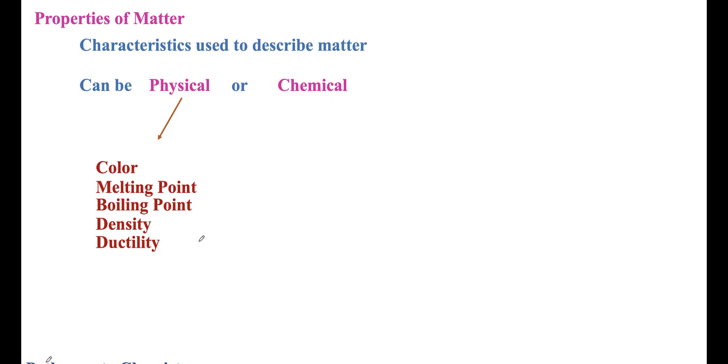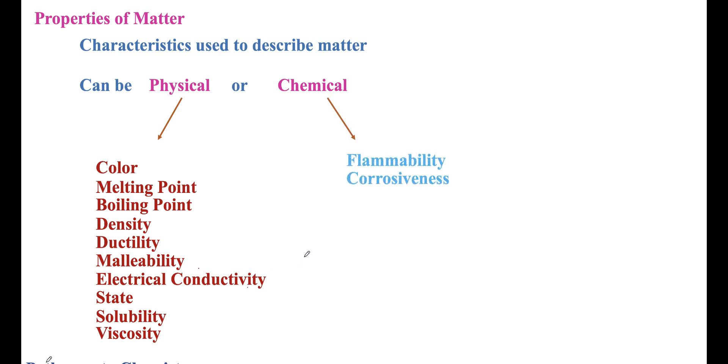Ductility would be, for example, metals—we're able to draw them into wires. Malleability—we're able to pound metals into shape. Electrical conductivity is a physical property. The state of a substance—is it a liquid, a solid, or a gas? Solubility and viscosity. Some chemical properties include flammability, corrosiveness, reactivity, and decomposition.